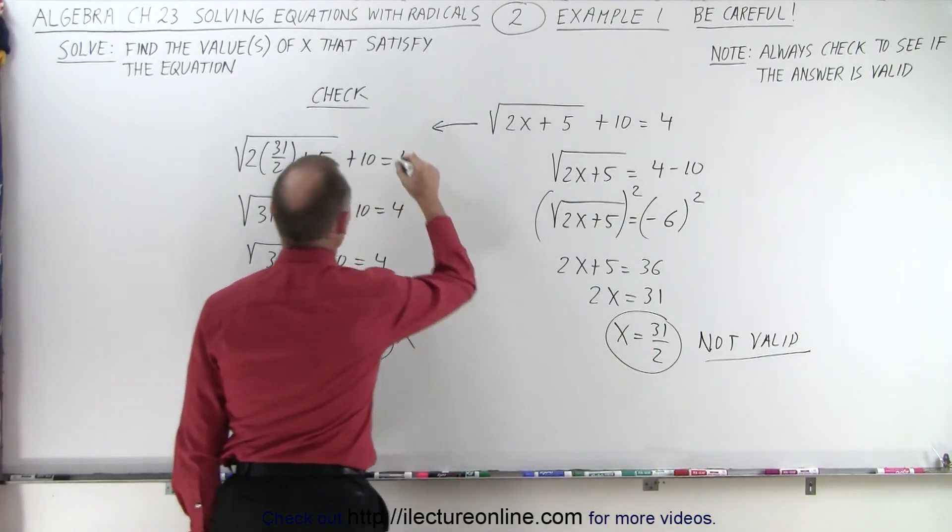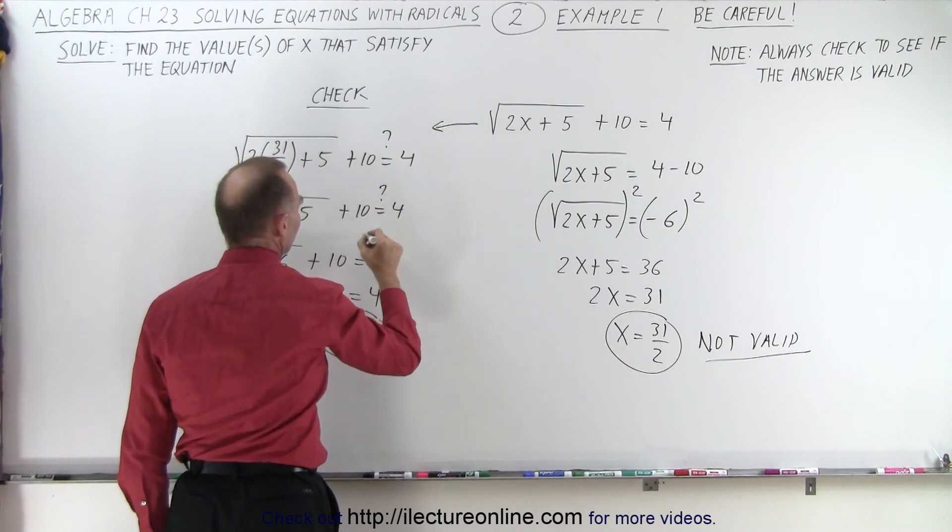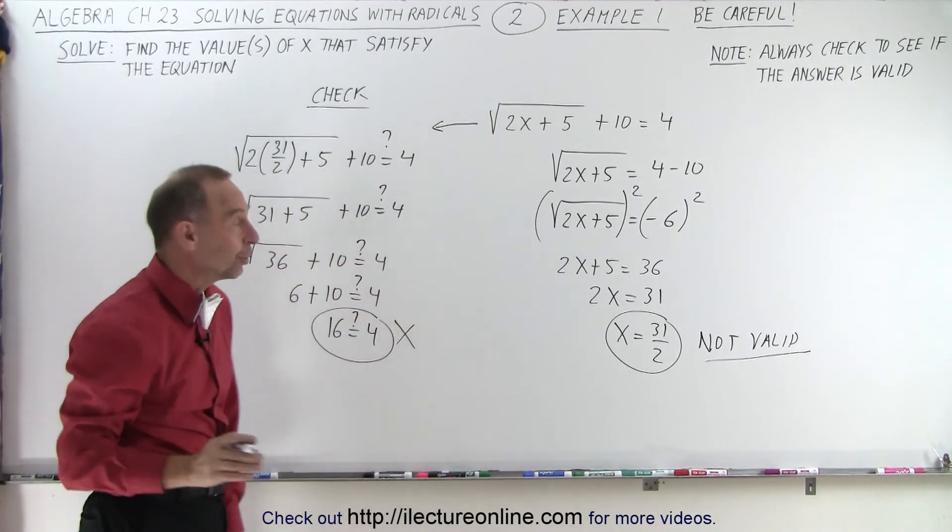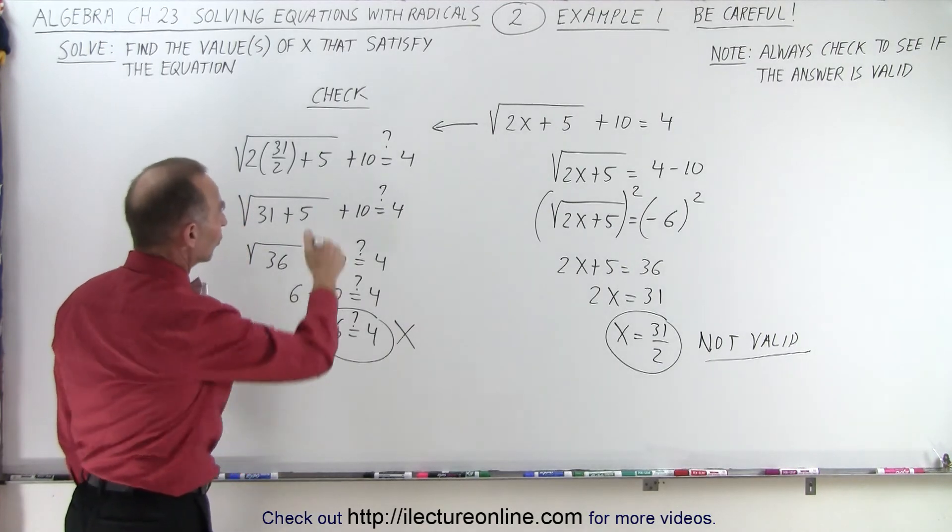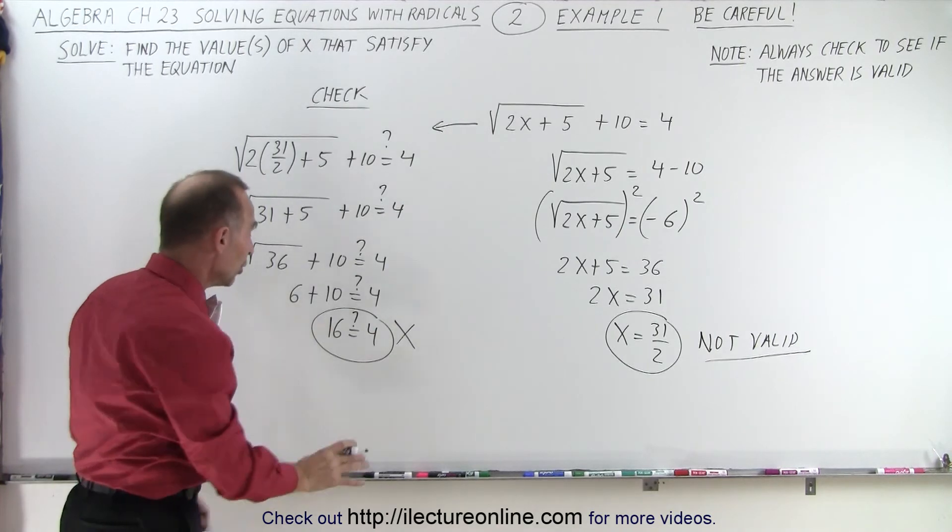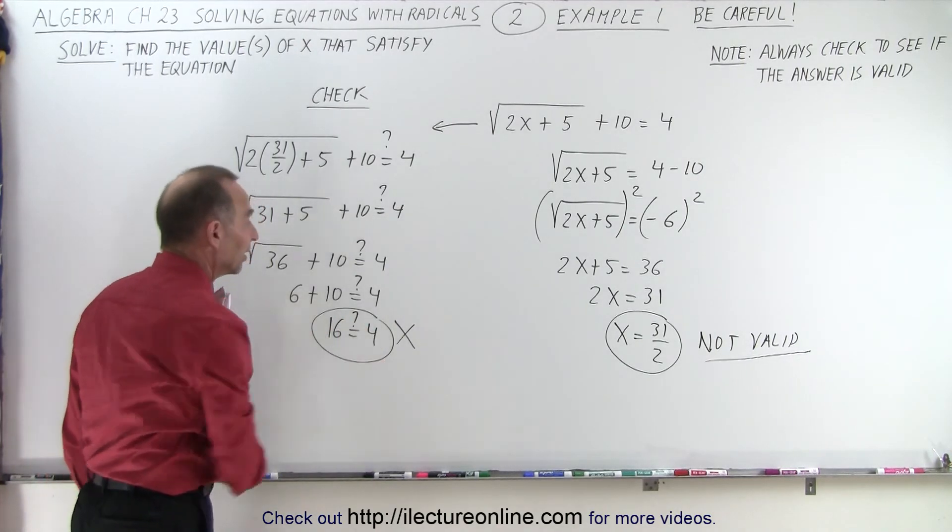Now, of course, we could have put in little question marks here, which is probably a good thing to do, because, after all, we don't know if it's equal. We're trying to check to see if it's equal. So it's not a bad idea to put a little question marks there just to say we're just checking. We don't know. And finally, we end up with something like this.